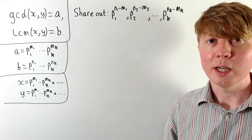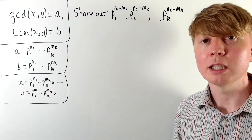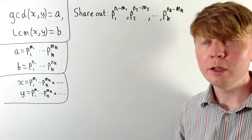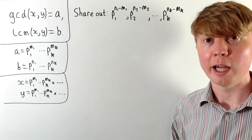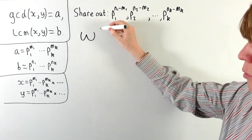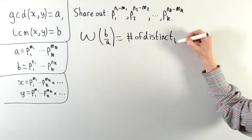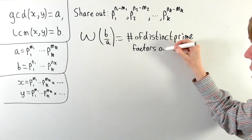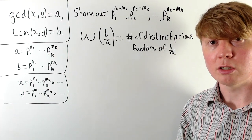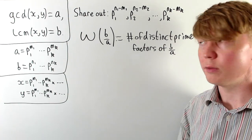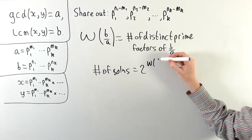We need to count only the primes where ni is strictly greater than mi — where there is something left to share out. Looking at the prime factorisation with exponents n1 minus m1, n2 minus m2, and so on, this is essentially the prime factorisation of b divided by a. We can use the prime omega function of b over a, which counts the number of distinct prime factors of a given integer. The total number of solutions is then 2 to the power of omega of b over a.